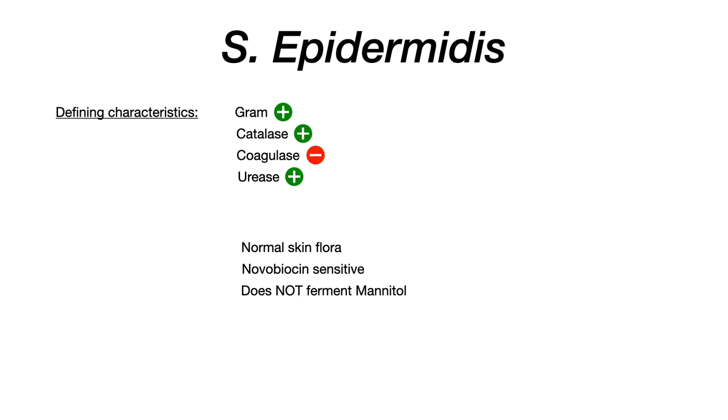Staph epidermidis is a Staphylococcus, so just like Staph aureus, it has cocci — spherical, round-shaped pathogens that typically appear in clusters. So if the test writer gives you an image on your exam and you see something like this, for the most part you can't really tell if this is Staph epidermidis or Staph aureus. Perhaps a seasoned pathologist or histologist would be able to tell immediately, but as a student, you're not going to be able to tell.